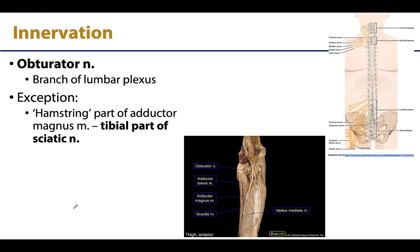The majority of the muscles in this compartment are innervated by the obturator nerve, coming off the lumbar plexus - similar to the femoral nerve, so both are branches of the lumbar plexus. This is another notable compartment not innervated by the sciatic nerve, except for the hamstring part of the adductor magnus, which is innervated by the sciatic nerve, specifically the tibial part. The tibial nerve is one of its two terminal branches, and this is the same innervation we will see when we get to the rest of the hamstrings in our next learning objective.